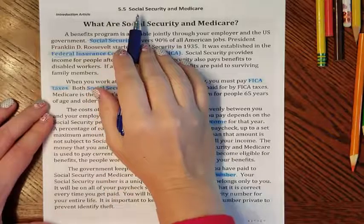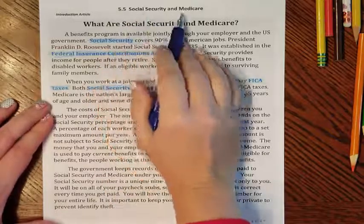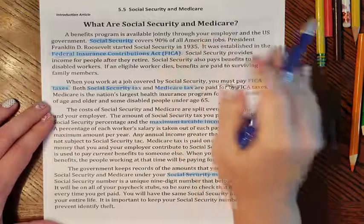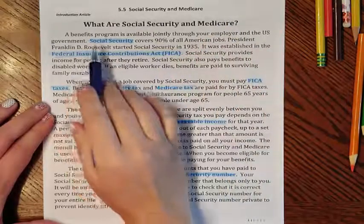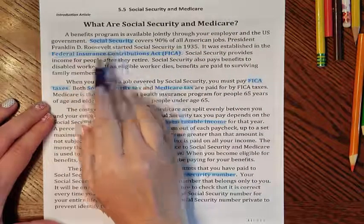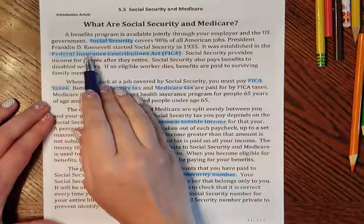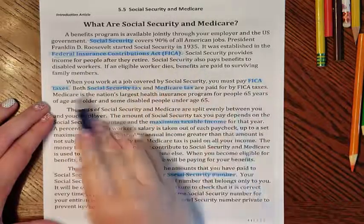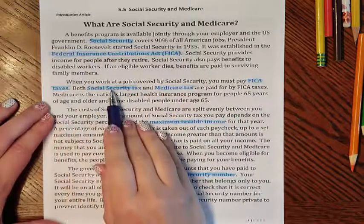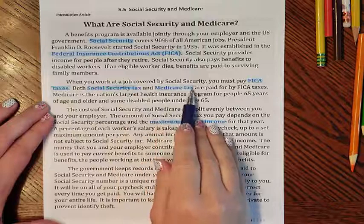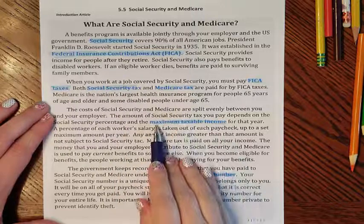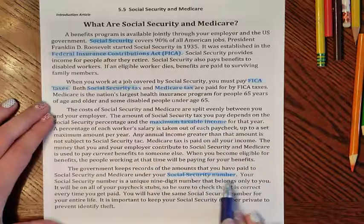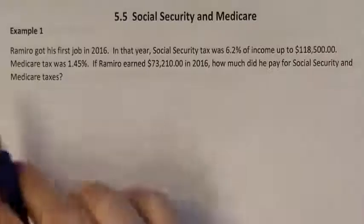Lesson 5.5: Social Security and Medicare. Please read the article before moving on to the next lesson. Our terms today are Social Security, Federal Insurance Contributions Act known as FICA, FICA taxes, Social Security taxes, Medicare tax, maximum taxable income, and Social Security number.